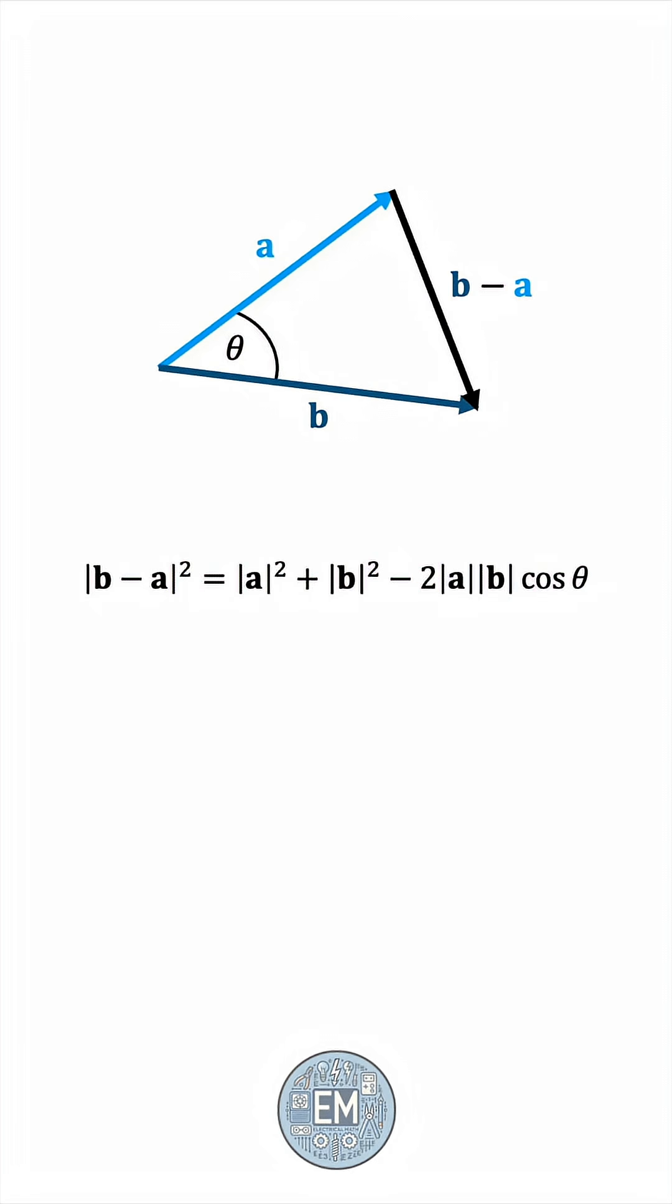Say we have vectors a and b with generic components a1, a2, and b1, b2. Here, we're assuming two-dimensional vectors, but the result can be extended to 3D very easily.